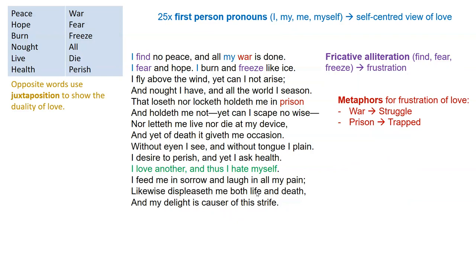Lastly, looking at the line 'I love another, and thus I hate myself' — the verb 'hate' is a strong word showing the intensity of his feelings. If you get a question about how love is presented, clearly it's a very self-critical one, full of self-hatred and self-loathing. With this poem, I would want to focus on the use of the Petrarchan sonnet and the use of these juxtaposing images, then add a few other points to finish off my arguments.